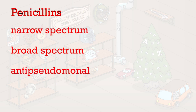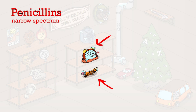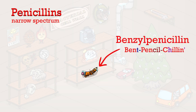Narrow spectrum penicillins cover mostly gram-positive infections. There are two narrow spectrum penicillins in this picture: benzylpenicillin and flucloxacillin. The bent-pencil-chillin represents benzylpenicillin. Benzylpenicillin is also known as penicillin G and has the greatest activity against gram-positive cocci and non-beta-lactamase-producing anaerobes.